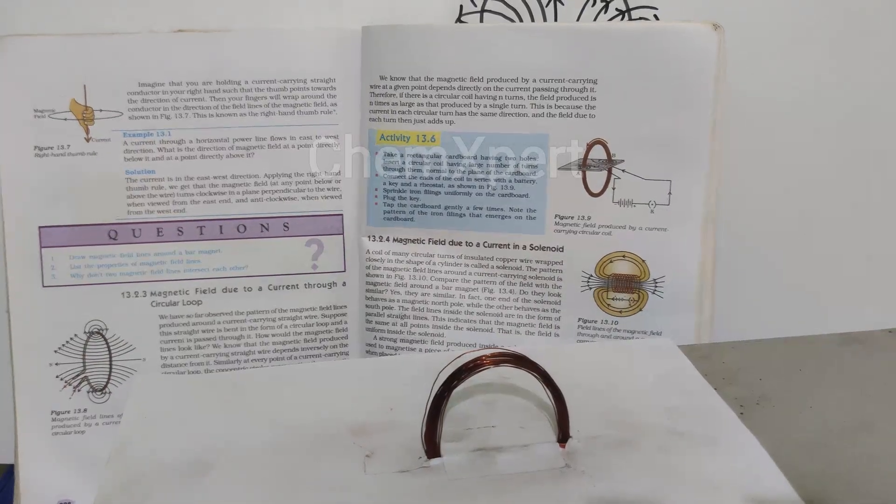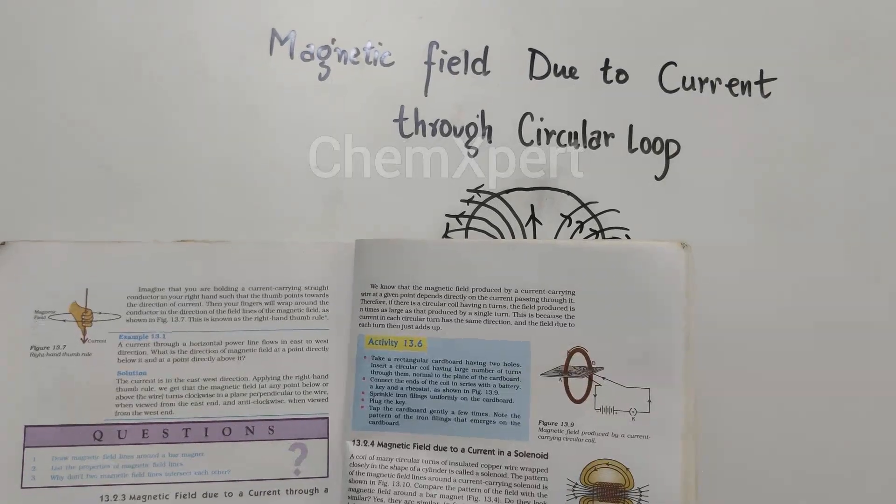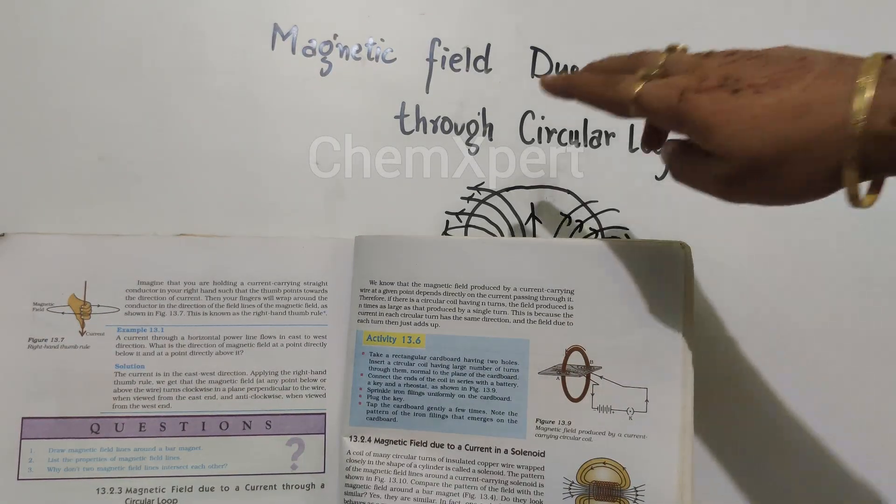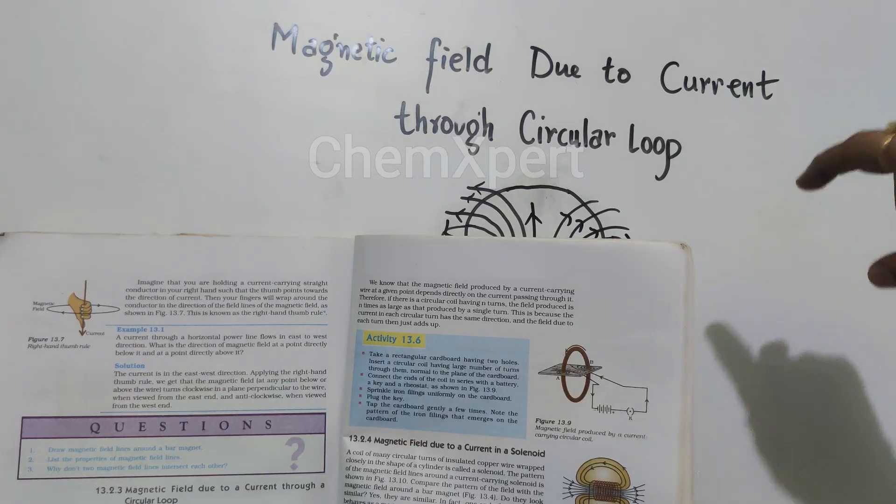Hello everyone, in this video we will perform an activity from class 10 science chapter on magnetic effect of current. In this activity, we will demonstrate that a magnetic field is produced due to current through a circular loop.